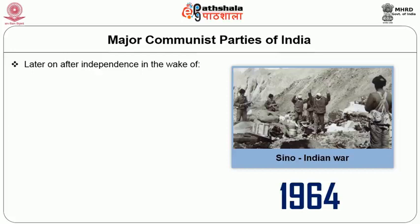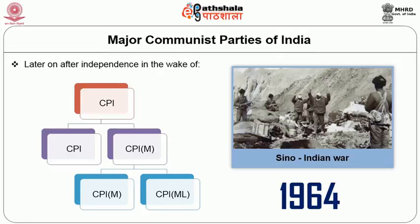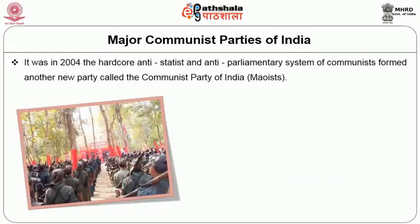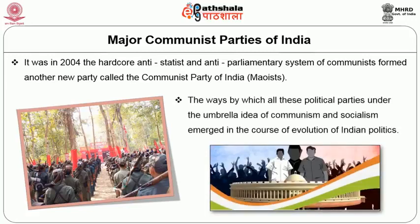Later on, after independence, in the wake of the Sino-Indian War of 1964, CPI was divided into CPI and the Communist Party of India (Marxist), CPI-M. However, after 1967, CPI-M was again divided into CPI-M and the Communist Party of India (Marxist-Leninist). It was in 2004 that the hardcore anti-statist and anti-parliamentary communists formed another new party called the Communist Party of India (Maoist). In this section, we will see the ways by which all these political parties under the umbrella idea of communism and socialism emerged in the course of evolution of Indian politics.